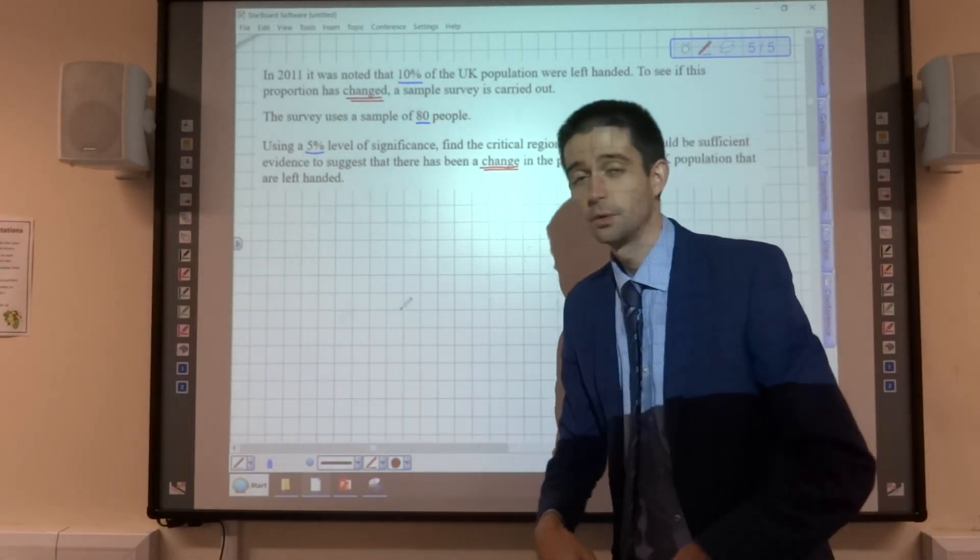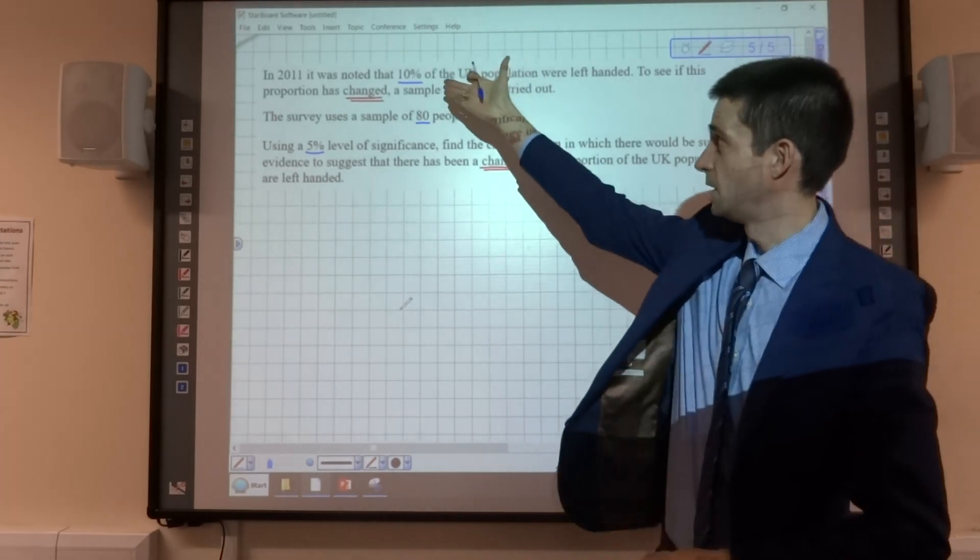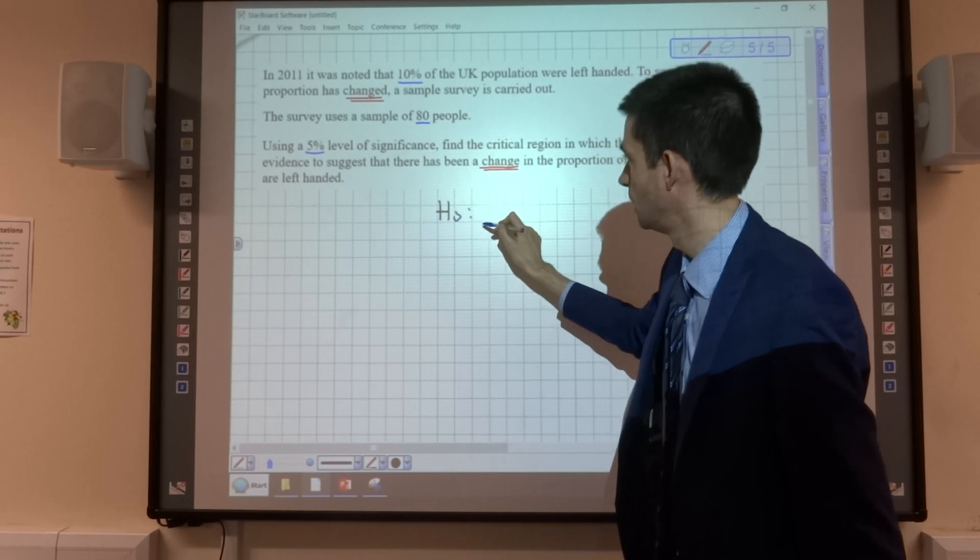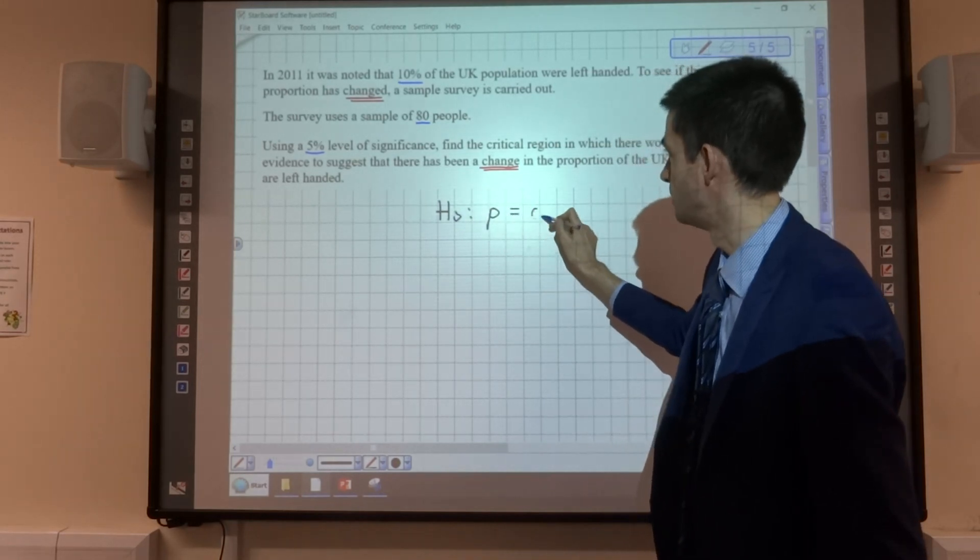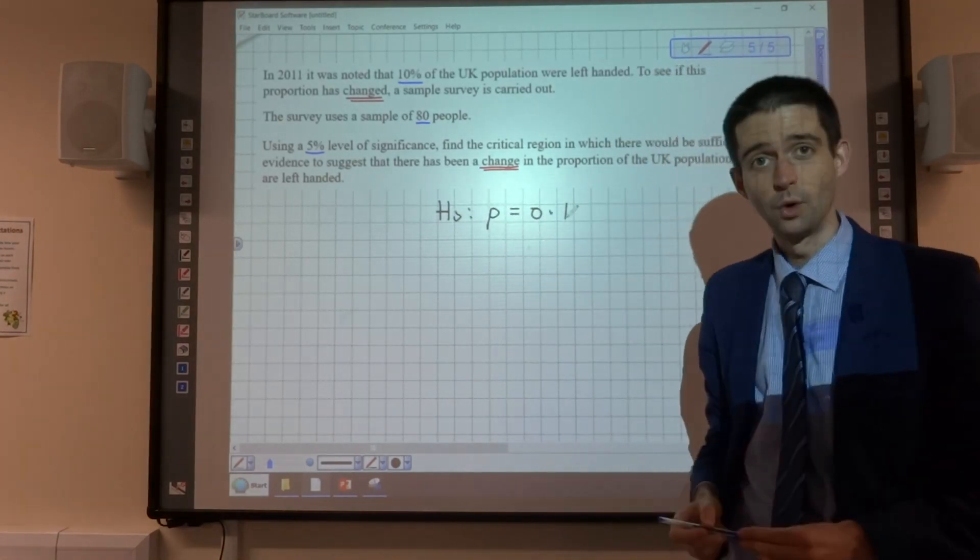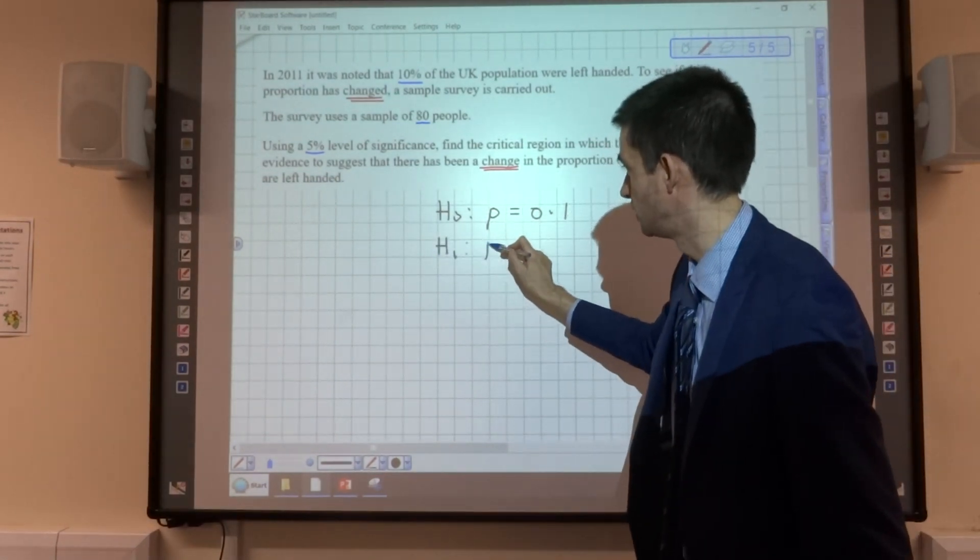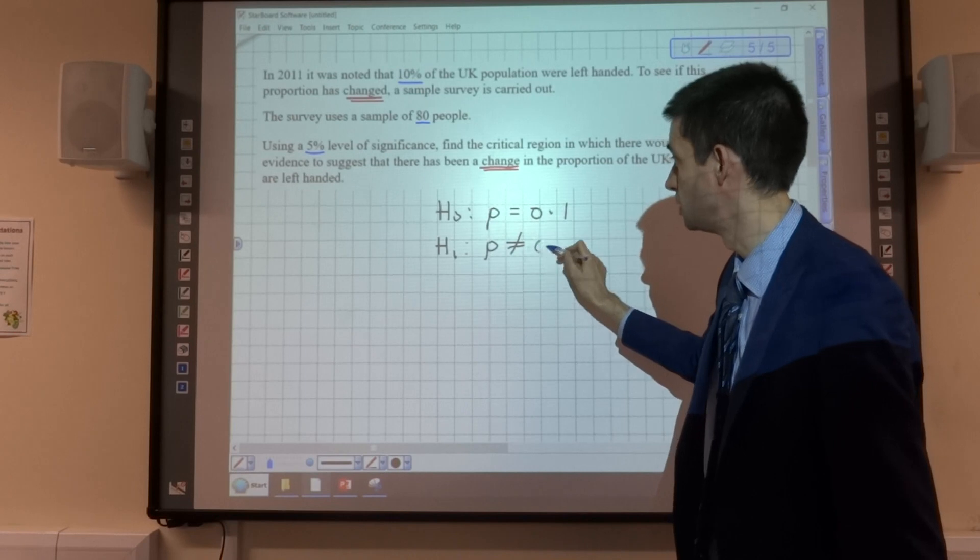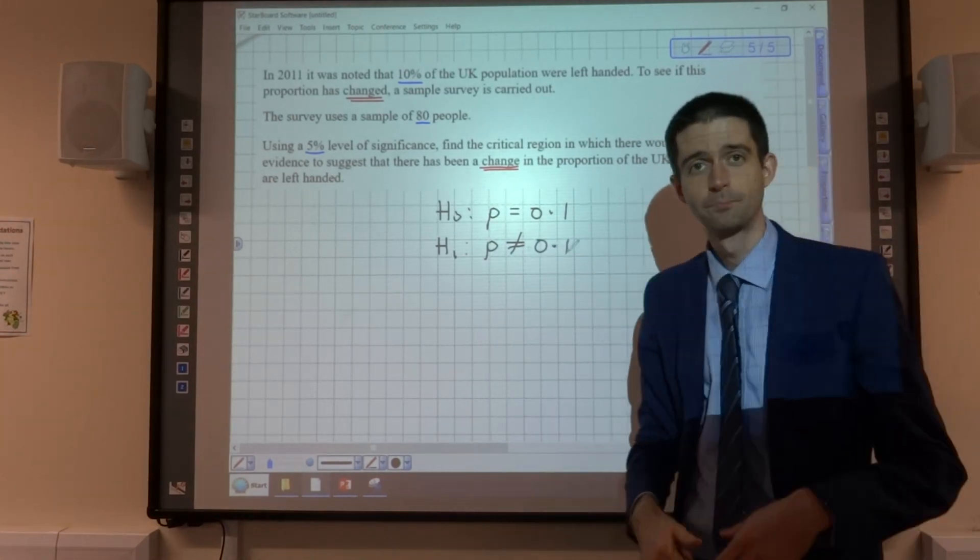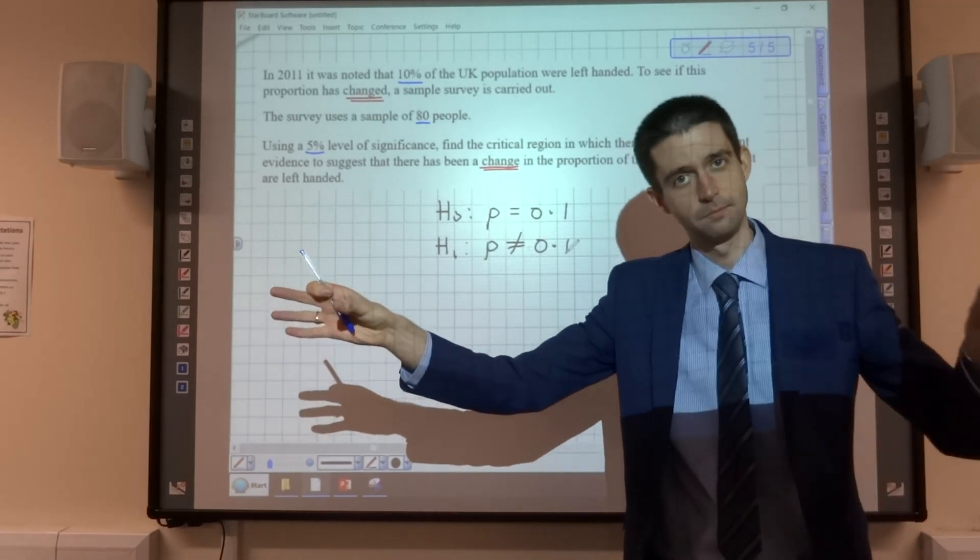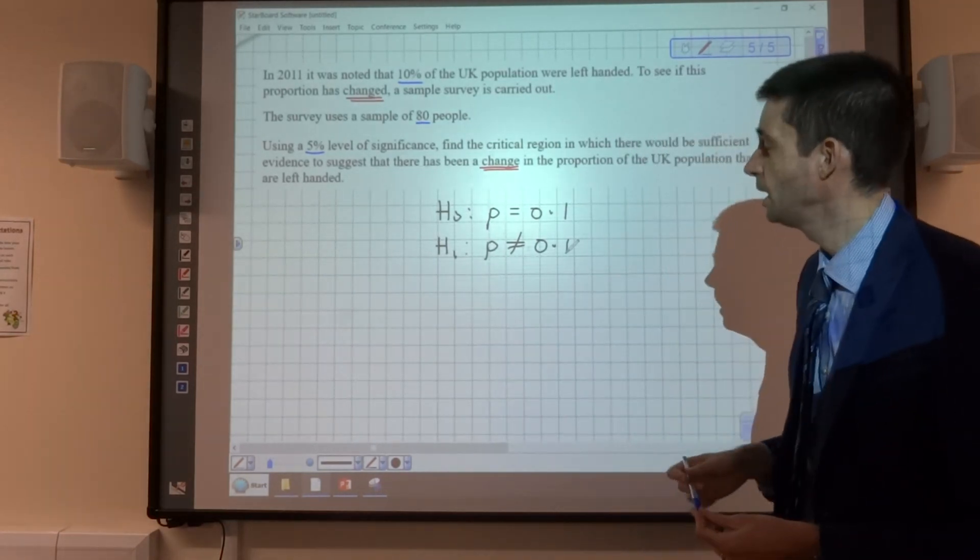Right, okay, so we're going to start with the assumption that this probability is true. So our null hypothesis is that the probability of being left-handed in the UK is 0.1, and because it's a two-tailed test, our alternative hypothesis is that the probability is not 0.1. So it could be less, it could be more. We're doing a two-tailed test one side, the other side.